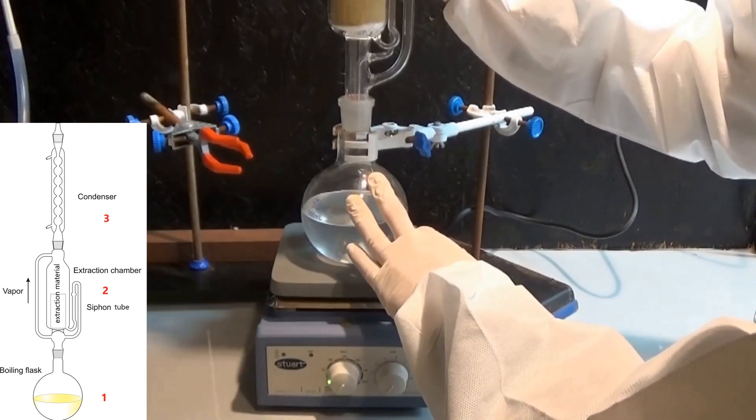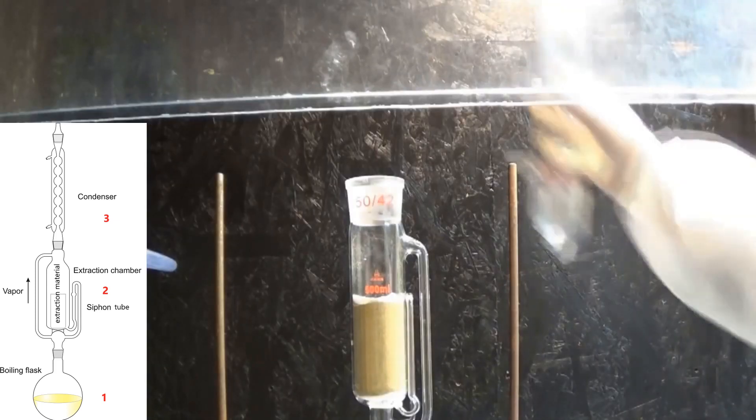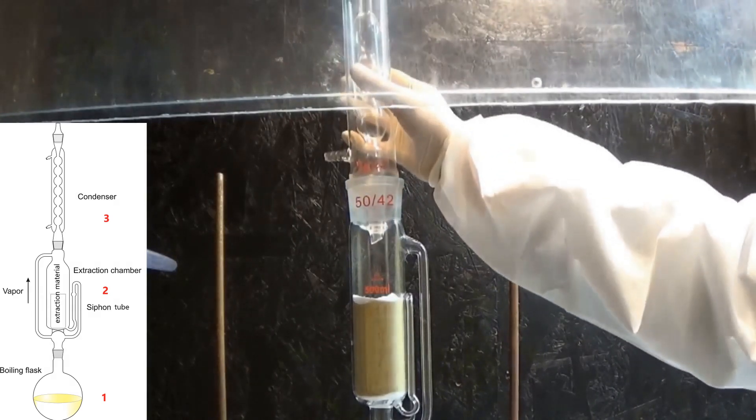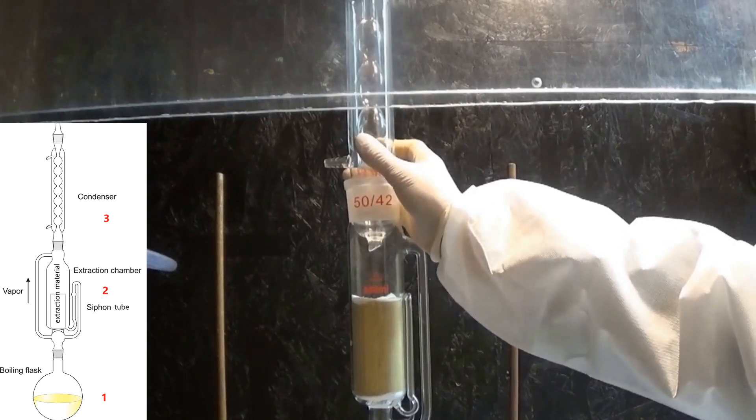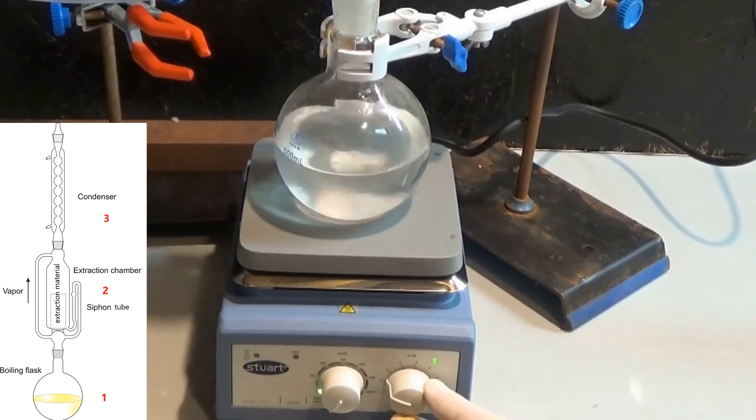Upon reaching the condenser, the vapor turns back into a liquid and drops into the extraction chamber. The still hot liquid solvent reaches the extraction material and solvates some of the molecules that are soluble in it. When the solvent reaches a certain level, the siphon effect kicks in and sucks out all of the solvent back into the boiling flask. Through this process, the extract concentrates in the boiling flask. From there on, the process starts anew.